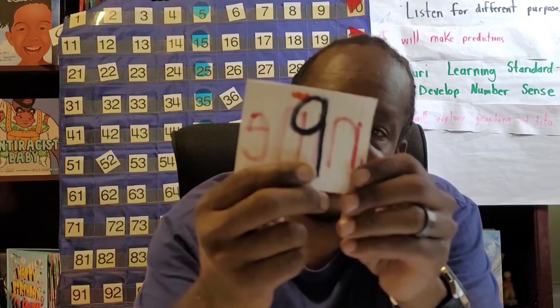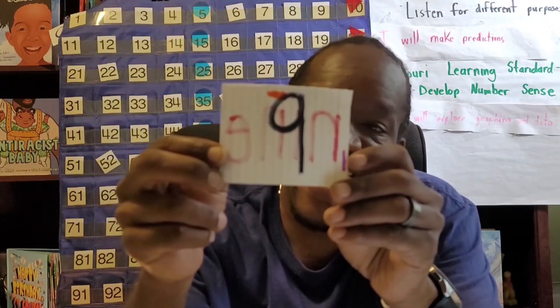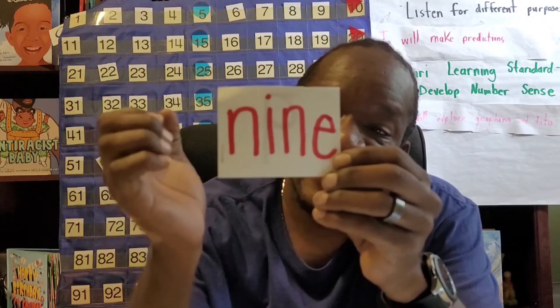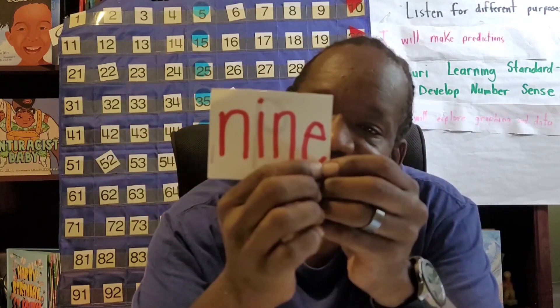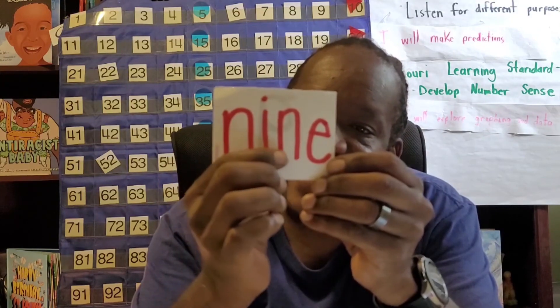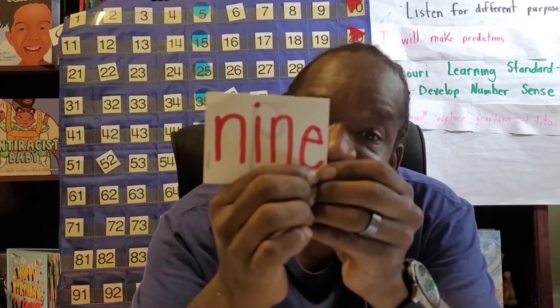Boys and girls, it's the end of the lesson today. I hope you learned. Let's make a prediction — what do you think Dr. Sanders is going to work on tomorrow? Let's spell one more word. What's this number? Nine. And what's this word? That's right, nine. Let's spell nine: N-I-N-E. Nine. The largest classroom in the region. Thank you.